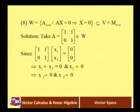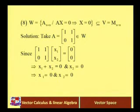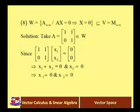Take A = [[1, 1], [0, 1]], which belongs to W. The reason: [[1,1],[0,1]] · (x1, x2) = (0, 0) gives equations x1 + x2 = 0 and x2 = 0. So x1 = 0 and x2 = 0, meaning capital x = 0. It satisfies the condition for the set, so A = [[1, 1], [0, 1]] belongs to W.